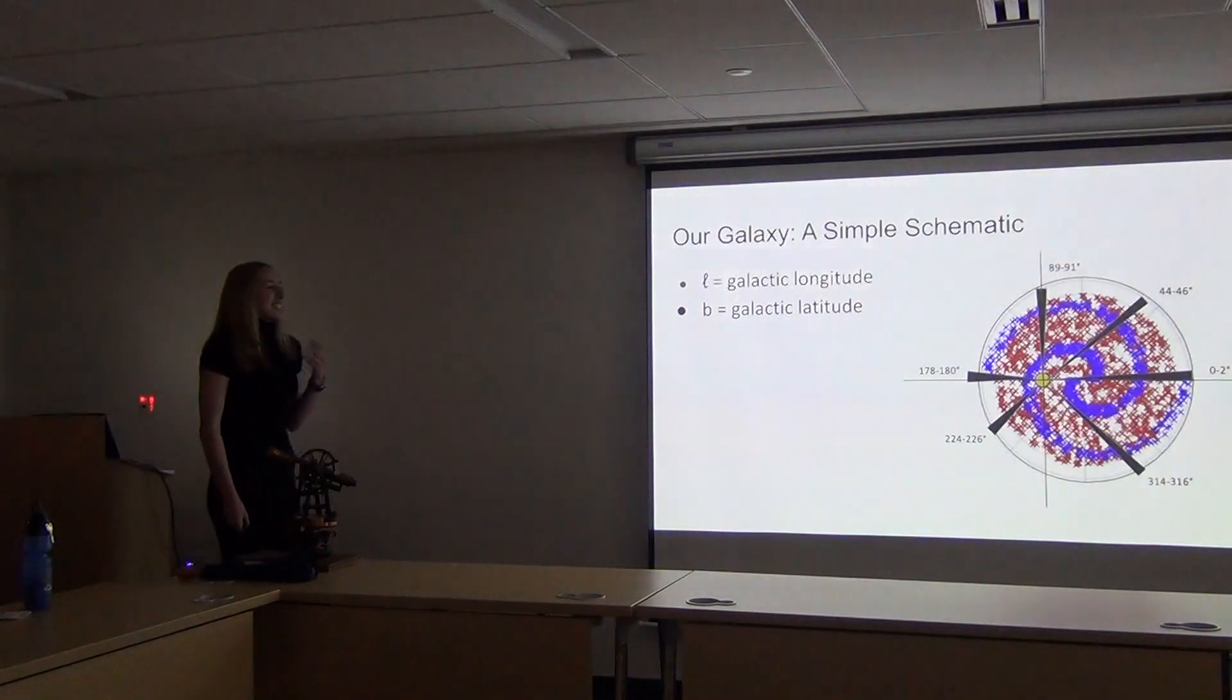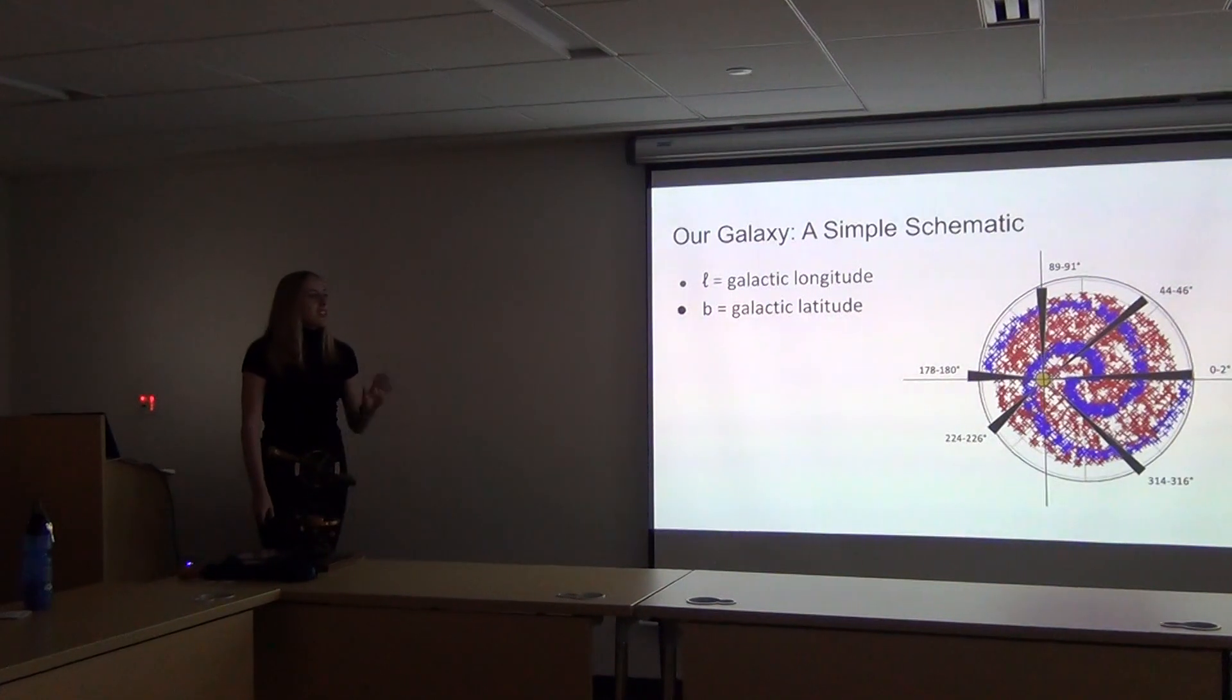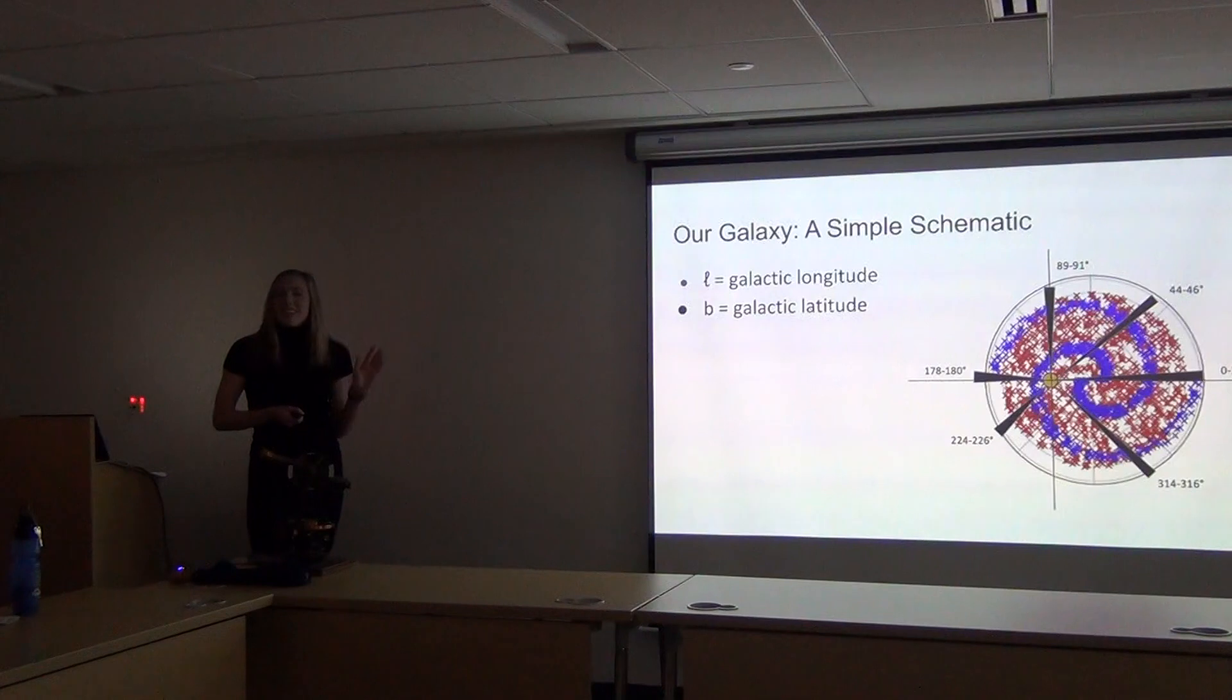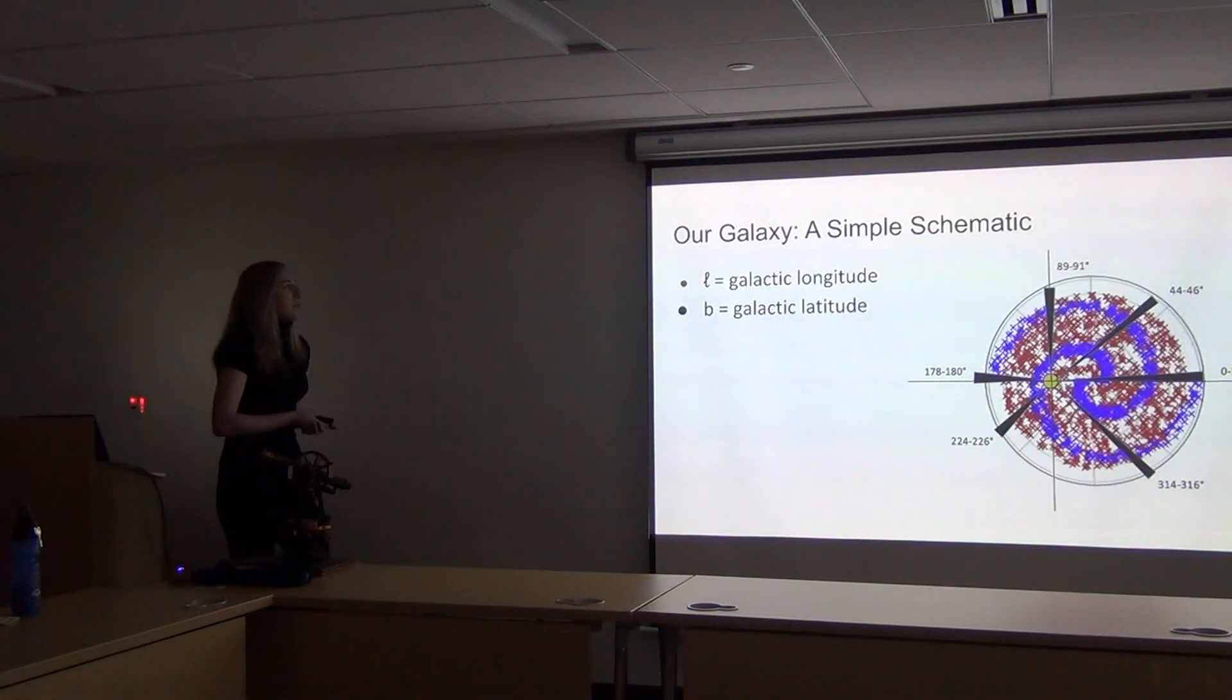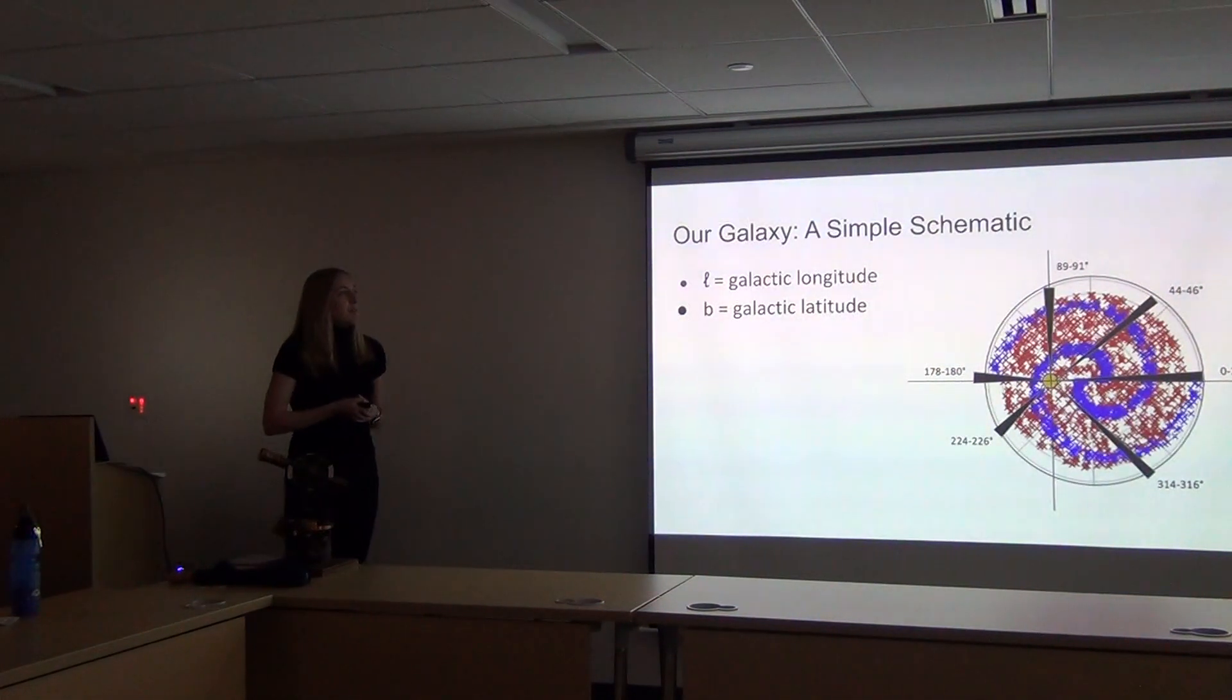So, how am I using Gaia in my research? This is kind of a simple schematic for our Milky Way. The yellow dot would be our sun, and you can notice it's a little off-center. Our Milky Way is like 30,000 parsecs across, and the sun is 8,000 parsecs away from that center. I filtered the Gaia data and took little wedge sections of different angles, and I did that for six sections.